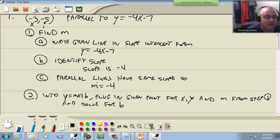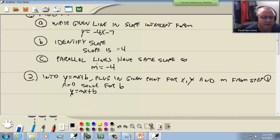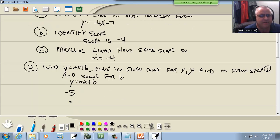Up here this is our X and this is our Y. So Y is equal to negative 5, and X is negative 3, and the M was negative 4 from step 1. I plugged in my X and my Y and the M from step 1, and now I'm going to solve for B.